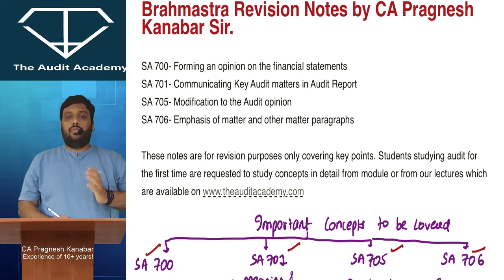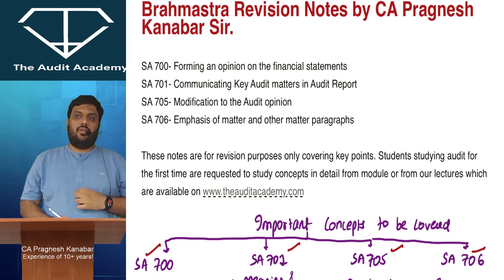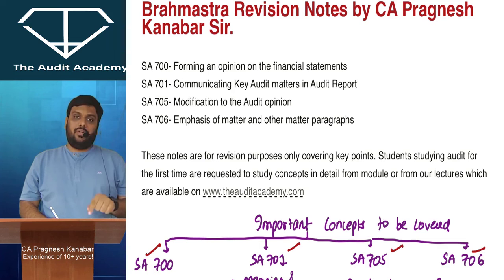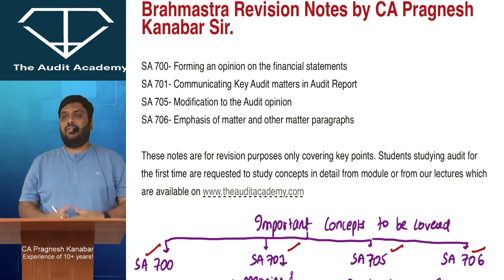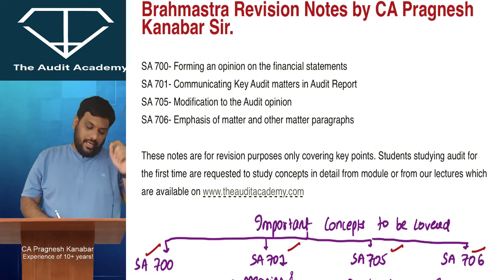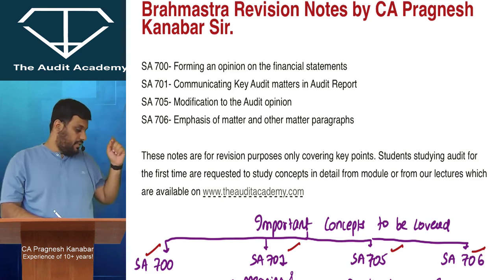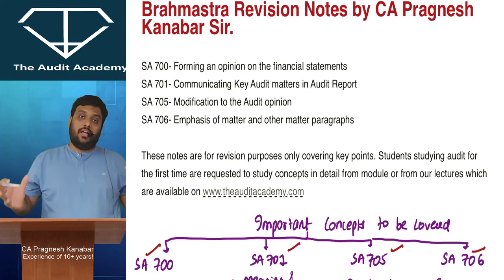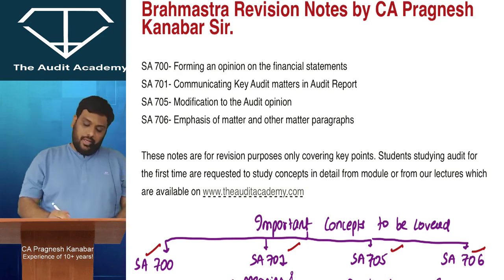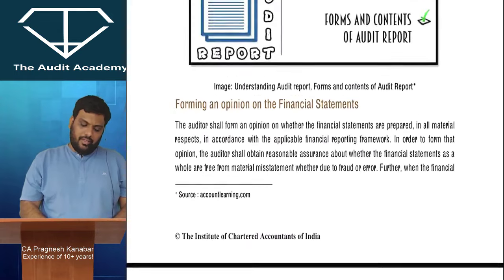Coming straight to the point: in CA Final Audit, there are 11 chapters of standards and 8 chapters of non-standards. In the 11 chapters of standards, you have 46 standards. This particular session will cover 4 very sensitive standards — SA 700, SA 701, SA 705, and SA 706 — which together cover the entire audit report. In the module, these are clubbed under Chapter 7.